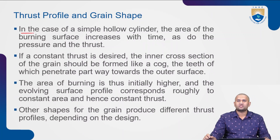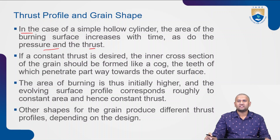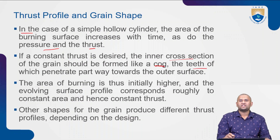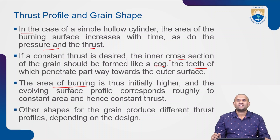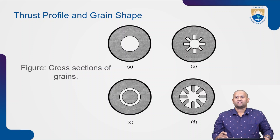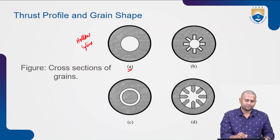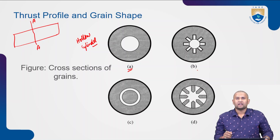In the case of a simple hollow cylinder, the area of the burning surface increases over time, as does the pressure and thrust. If a constant thrust is desired, the inner cross section of the grain should be formed like a cog — with teeth penetrating partway into the grain from both outer and inner surfaces — so the area of burning is initially higher and evolves with a surface profile corresponding roughly to a constant area and hence constant thrust. Other shapes produce different thrust profiles depending on the design. The figure shows cross-sections of grain types A, B, C, and D — the cross-sectional area of a solid propellant motor.